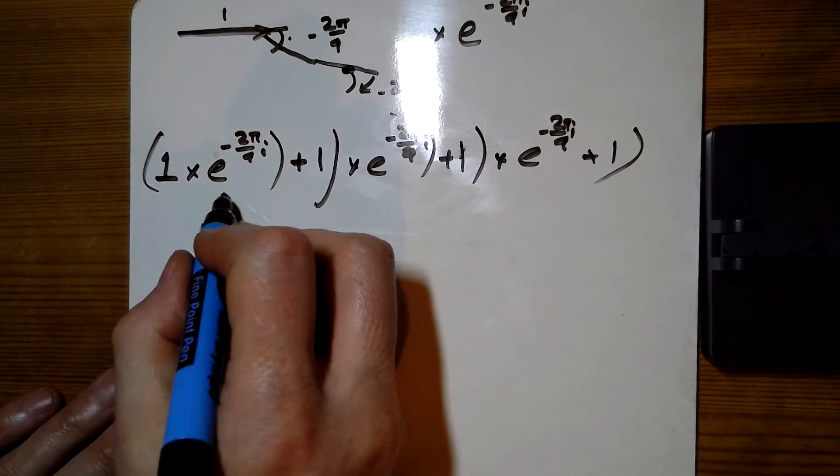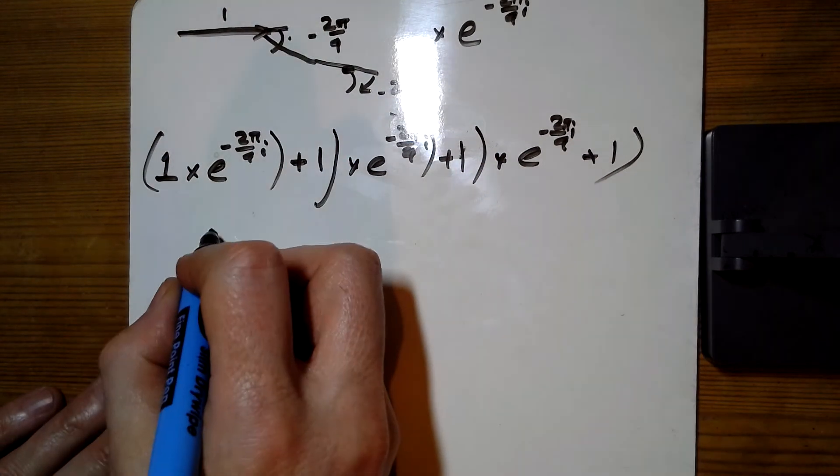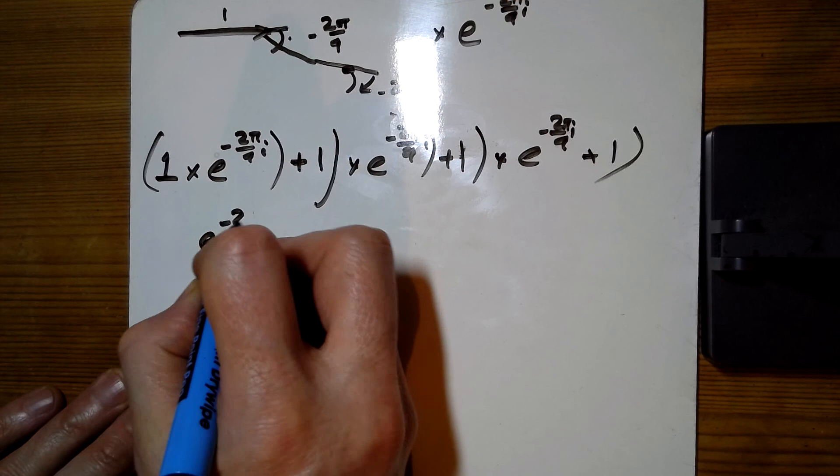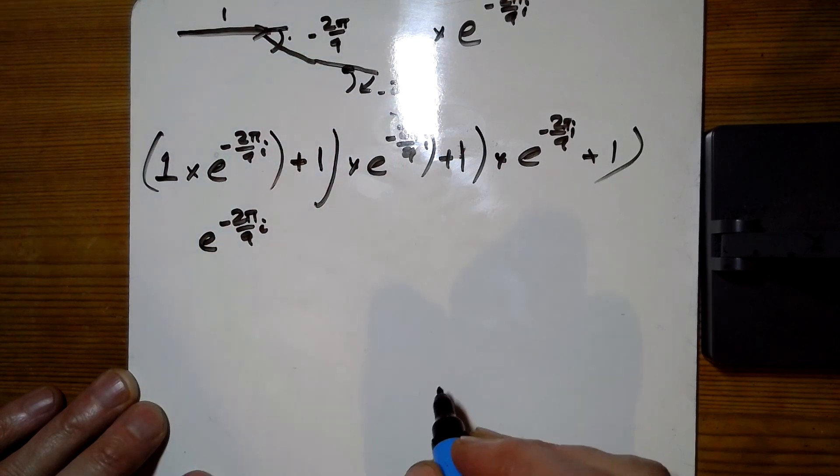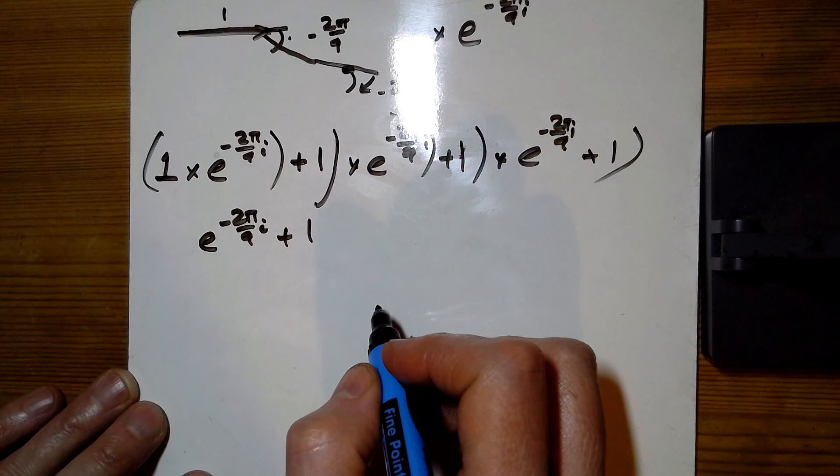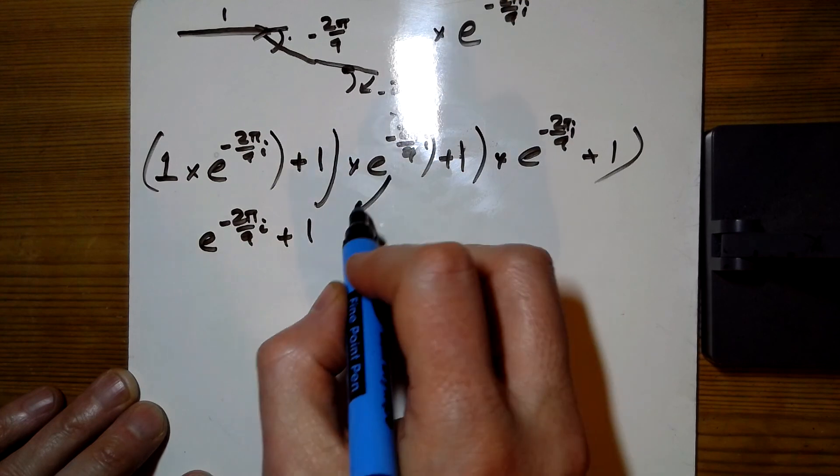Right, now looking at this bit by bit here. So this bit here was just e to the minus 2pi over 9i. Now when I add 1 to that, I'm now going to times it by all of this.